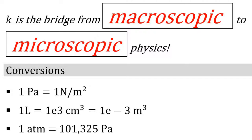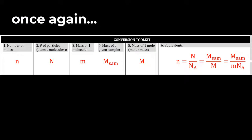Here are some conversion reminders. 1 pascal is 1 newton per square meter. 1 liter is 1,000 cubic centimeters or one thousandth of a cubic meter. Standard atmospheric pressure is 101,325 pascals. I want to draw your attention to boxes 1 through 6 because you need to deal with the number of moles, the number of particles, the mass of a molecule, the mass of a sample, the molecular mass of a substance, and mix them all together in various ways.